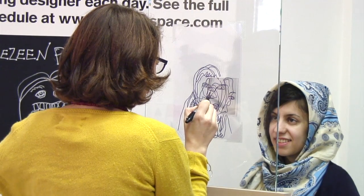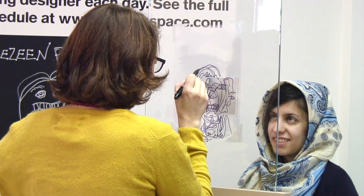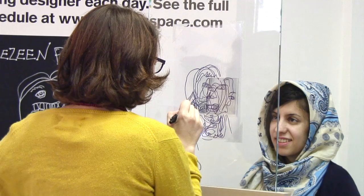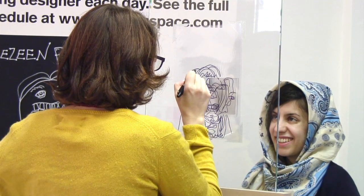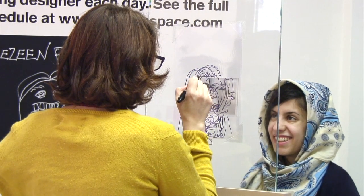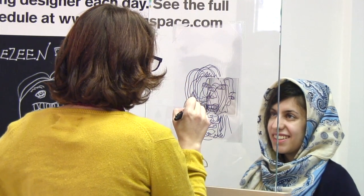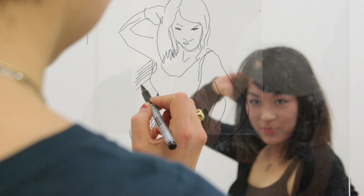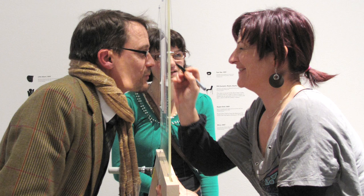The portrait machine is a simple tool where there's a sheet of glass which sits between two people. One side of the glass is a sheet of acetate, and on the other side is a distortion lens. As the person draws onto the acetate, the image that they're drawing becomes distorted because of the distortion lens.